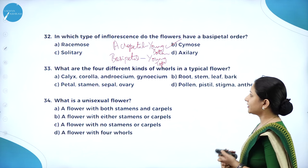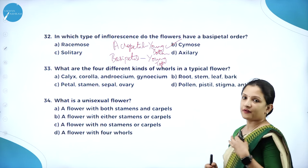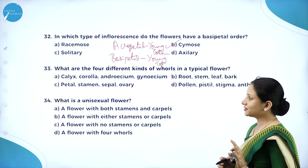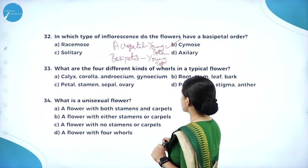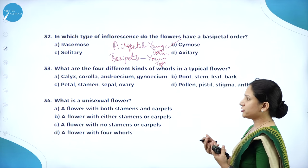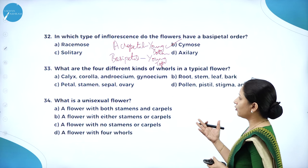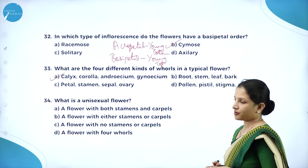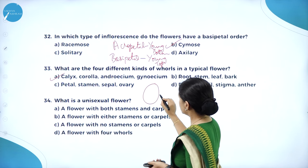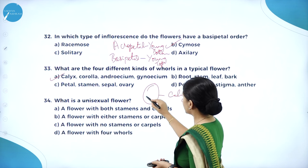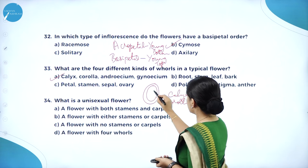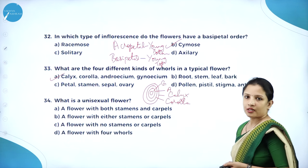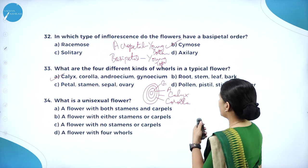What are the four different whorls in a typical flower? A flower is made up of four whorls: calyx, corolla, androecium, and gynoecium. The outermost whorl is calyx, then inner to calyx is corolla, inner to corolla is the androecium, and innermost is the gynoecium. Calyx is made up of sepals; corolla is made up of petals.